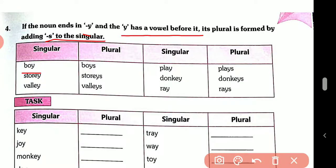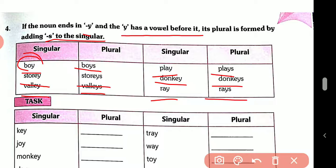For example: boy → boys. See, in b-o-y, the letter o comes before y, and o is a vowel, so we just add -s. Store → stores, valley → valleys, play → plays, donkey → donkeys, ray → rays.